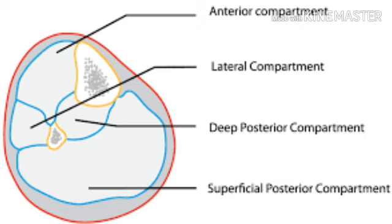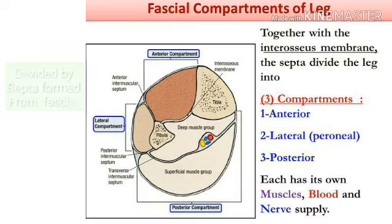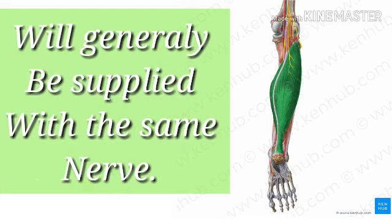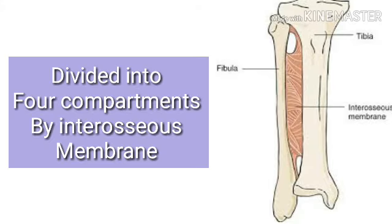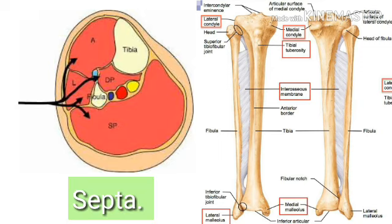The fascial compartments of the leg are four compartments that separate and contain the muscles of the lower leg from the knee to the ankle. The compartments are divided by septa formed from fascia. Each compartment usually has its own nerve and blood supply, separate from its neighbors. All muscles within a compartment will generally be supplied by the same nerve. The lower leg is divided into four compartments by the interosseous membrane of the leg and the bones of the lower leg — the tibia and fibula.